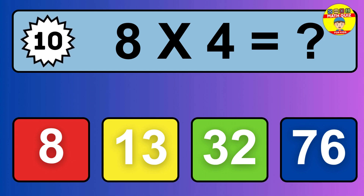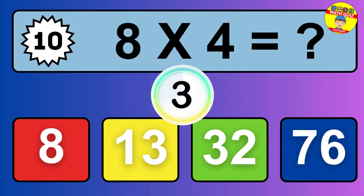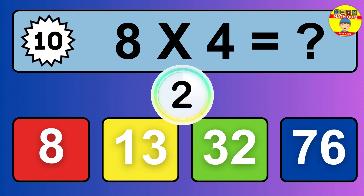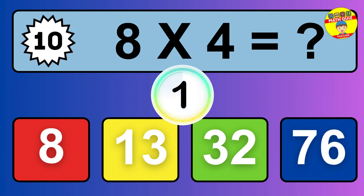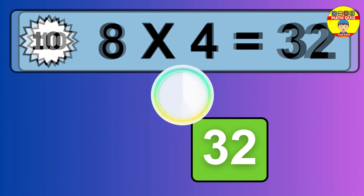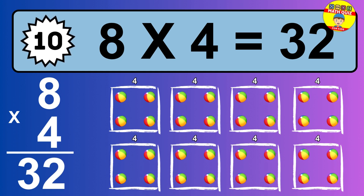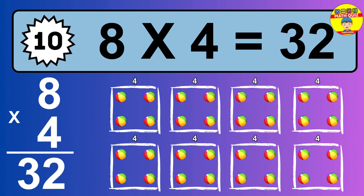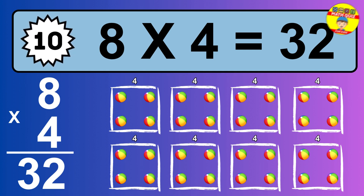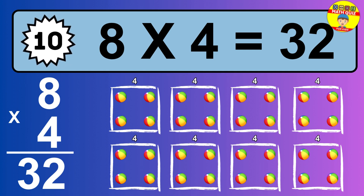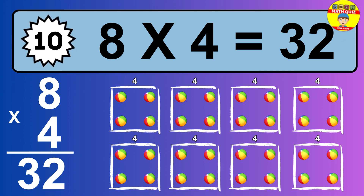Question 10. 8 times 4 equals what? The answer is 8 times 4 is 32. To calculate, we have 8 groups with 4 balls each one. So how many balls do we have? 32 balls.